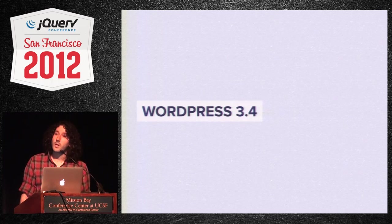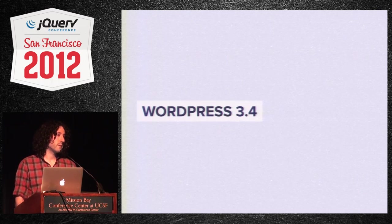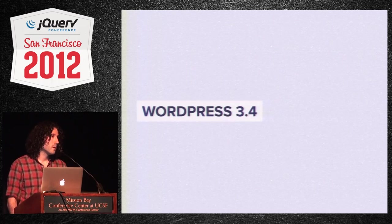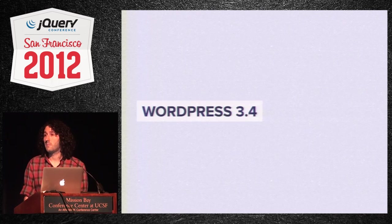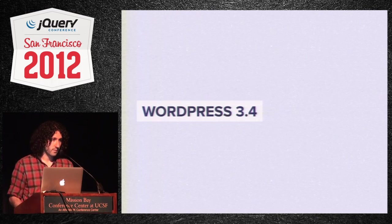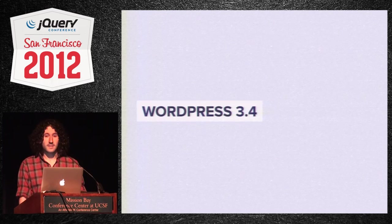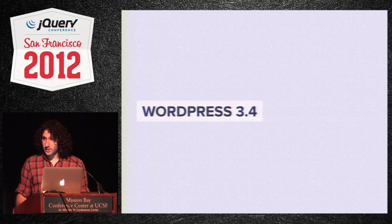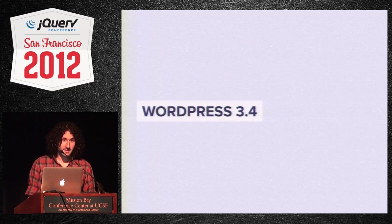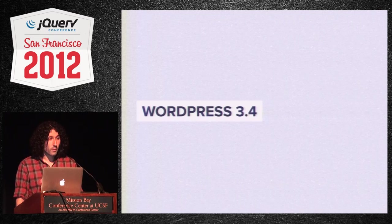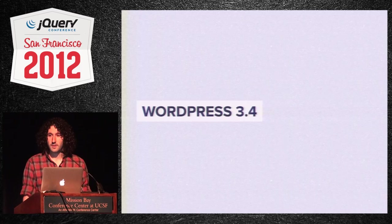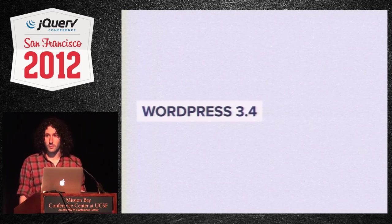WordPress 3.4 was just released, and the big focus was on appearance. We used to have this workflow where a user wanting to pick a theme would log in, choose their theme, activate it, and then all of their settings would get screwed up. They'd have to run through the site slowly changing everything while the site is live and broken — and only a power user would know how to do that. Everyone else would just say, 'My site broke. I don't know. I'm totally screwed. I guess I'll revert. Oh, it's still broken.'